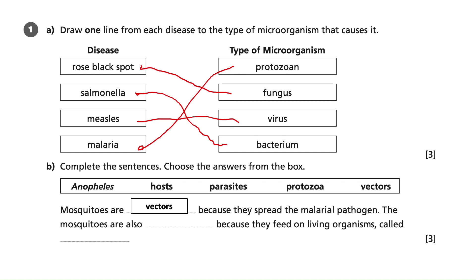Mosquitoes are also parasites. This shows us that when classifying organisms, any particular organism isn't limited to only one role — it plays a role as a vector but also as a parasite. They feed on living organisms, which is where we use the word 'host', because parasites feed on hosts. Those three correct words score the three marks available for this question.